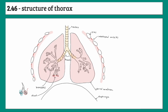In size order — something helpful to remember — the trachea branches out into two bronchi, which branch out into several bronchioles, which have air sacs called alveoli at the end.